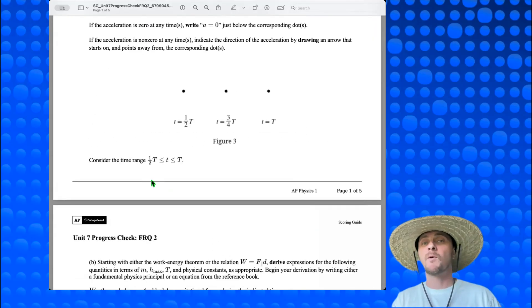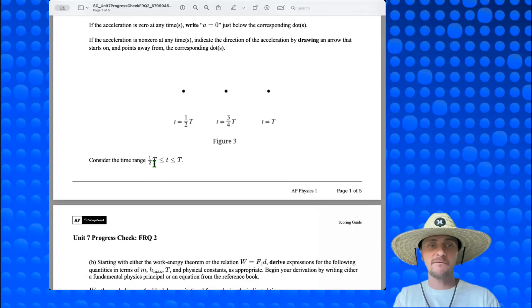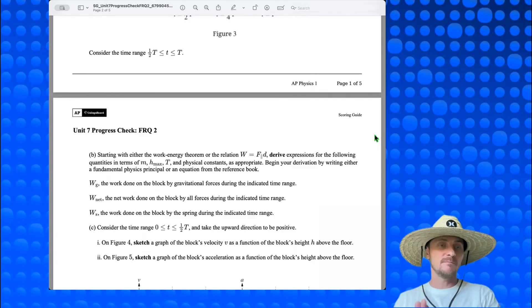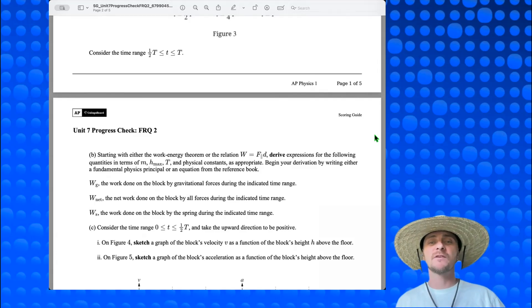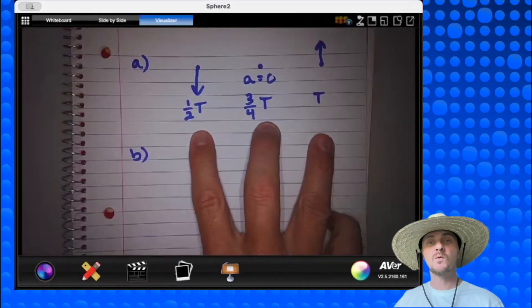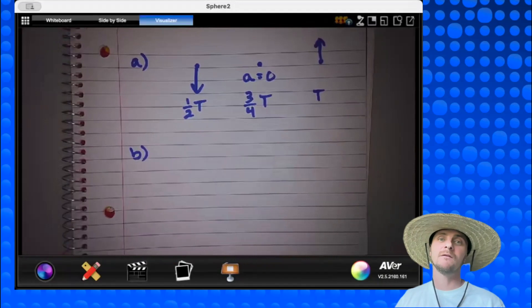Let's move on to part B. So for part B, we are considering the same exact time range. We're talking about half the period all the way to the full period. So this portion of the graph. All right, part B, starting with either the work energy theorem or the relation work equals the parallel force times distance, derive expressions for the following quantities in terms of mass m, h max, capital T, the period, and physical constants as appropriate. Begin your derivation by writing either a fundamental physics principle or an equation from the reference book. So we need to identify the work of gravity, the work net, and the work of the spring in terms of these ideas, and of course, gravitational acceleration g is fine. Let's go to the paper. And just as a quick aside, there are the visual answers to part A that I was just discussing.